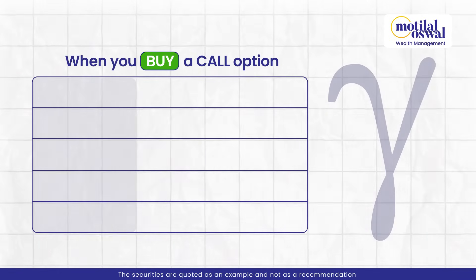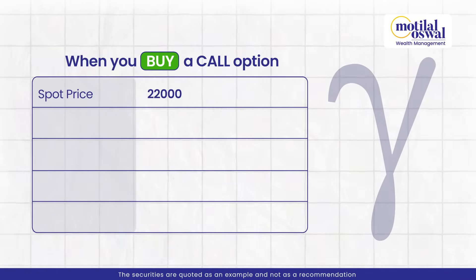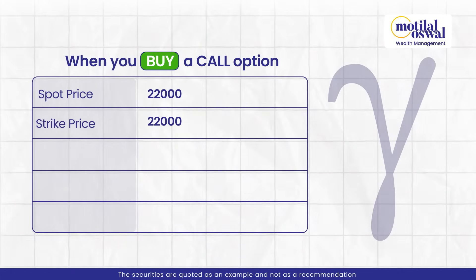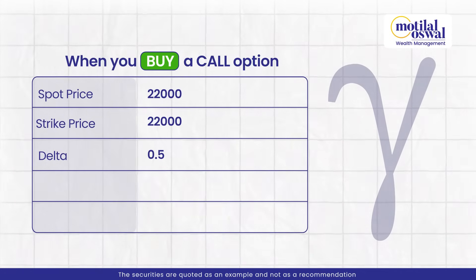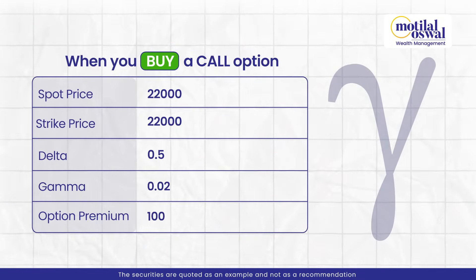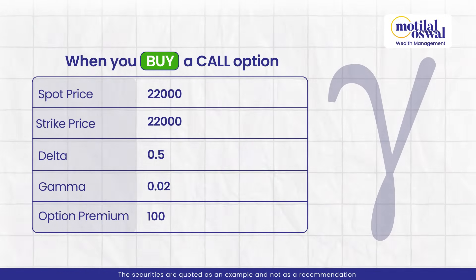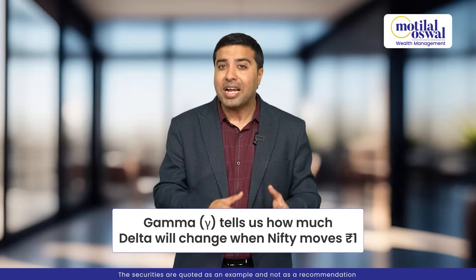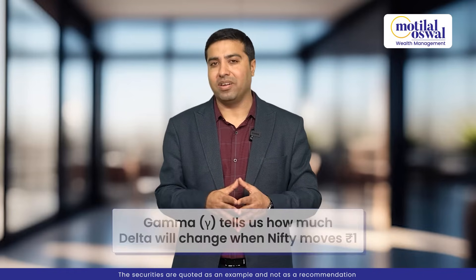Let's understand Gamma with an example. You buy a call option on Nifty. The market is at 22,000 and you select the 22,000 strike — an at-the-money option. The Delta is 0.5, Gamma is 0.02, and the option premium is 100. Gamma tells us how much Delta will change when Nifty moves by one point.